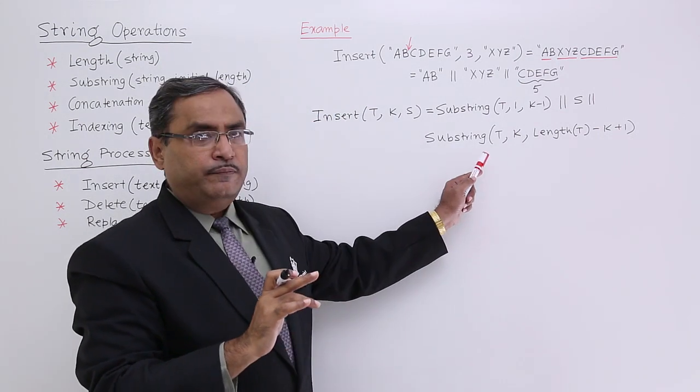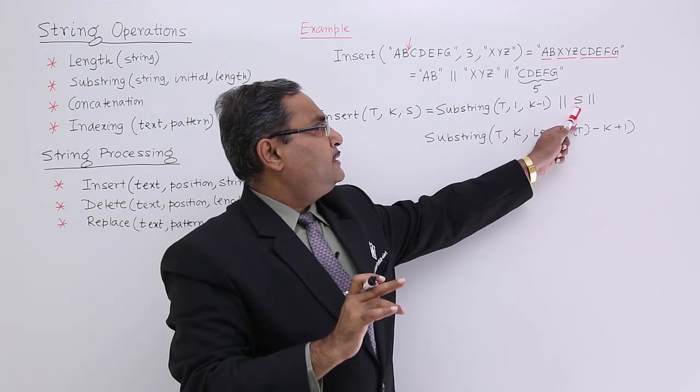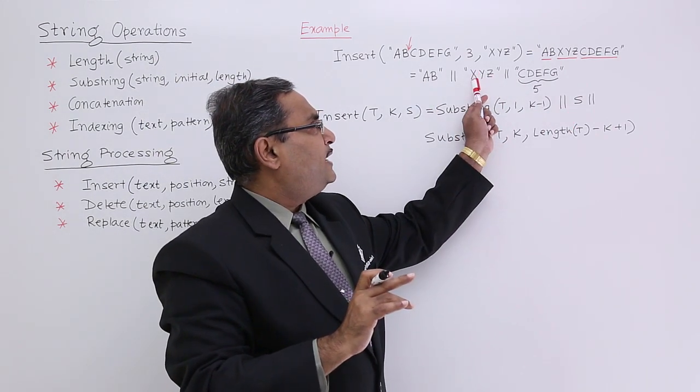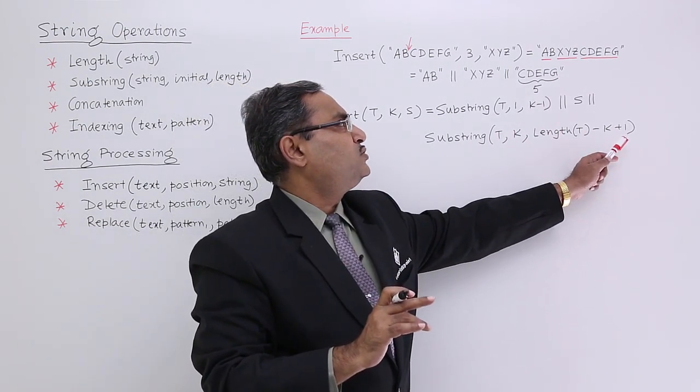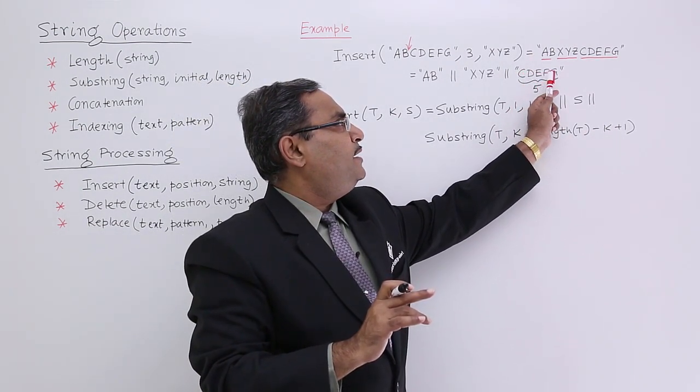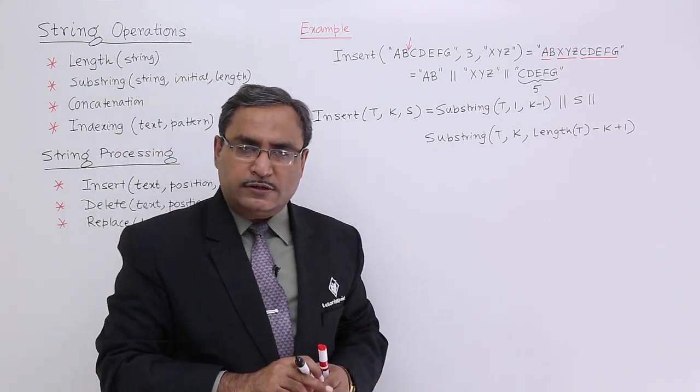Substring(T, 1, K-1) is giving me AB. S is giving me XYZ. And substring(T, K, length(T)-K+1) is giving me CDEFG. So in this way, there is a genetic form of this insert function.